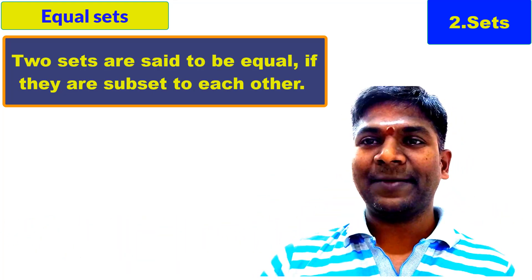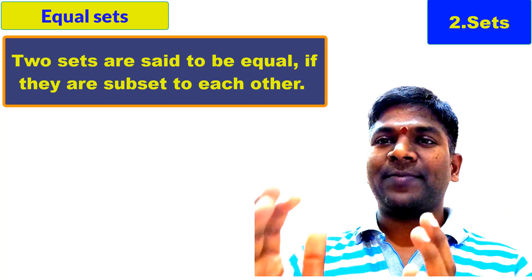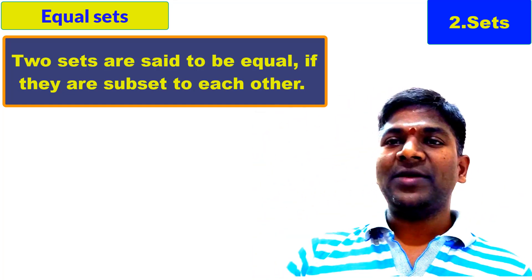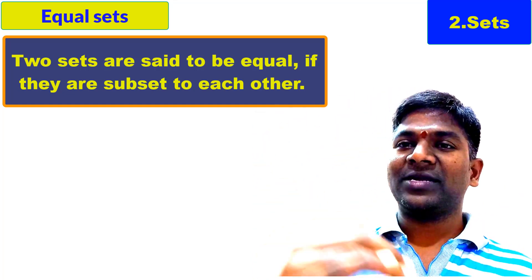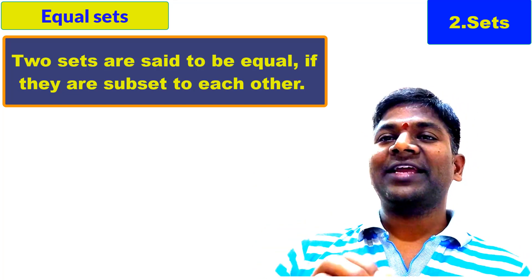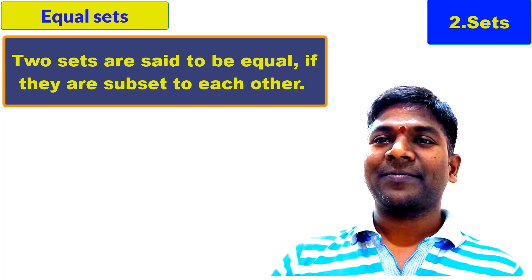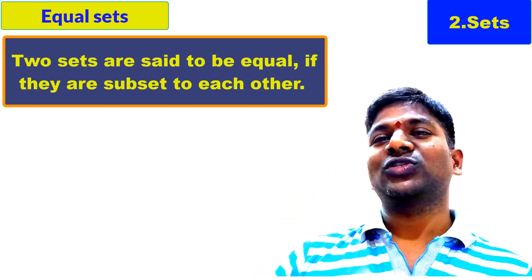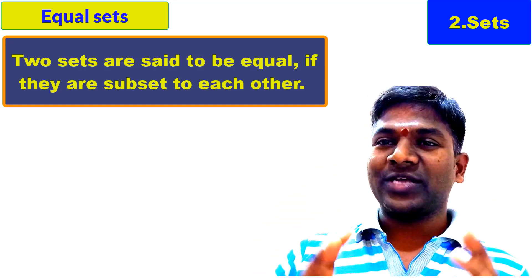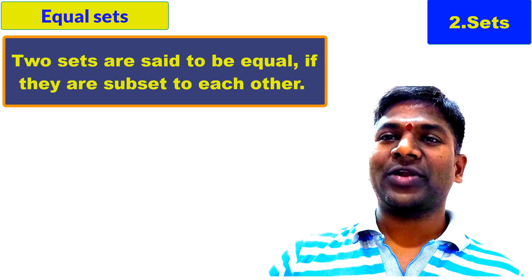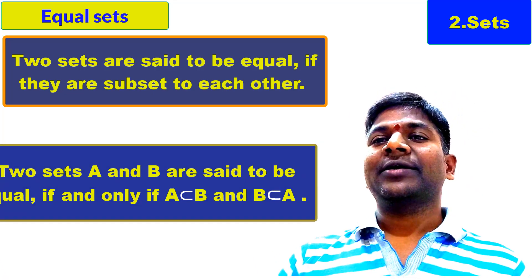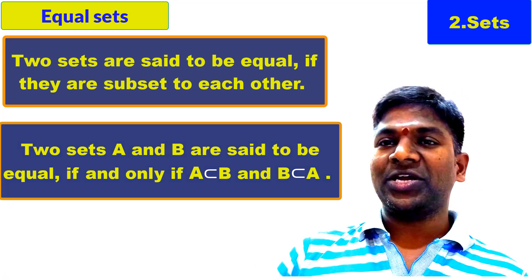Let us understand clearly. A subset B means all the elements of A are in B. B subset A means all the elements of set B are in A. When is it possible? When those two sets are equal sets only. So the condition for two sets to be equal is that both sets are subsets of each other.